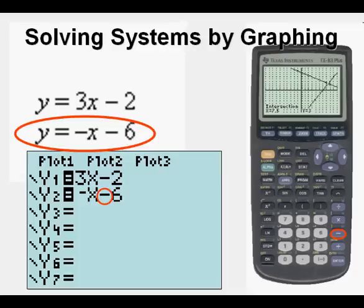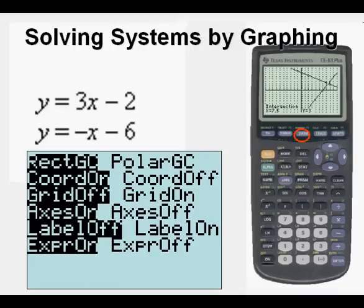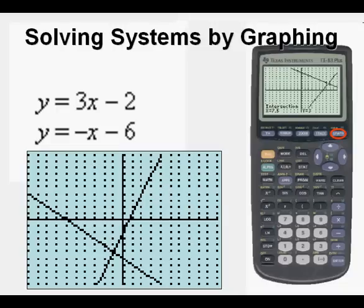Now we go ahead and graph those two functions. And we can find the intersection or the solution, but first we are going to turn grid on by pressing second, then zoom, which gives the format menu. And then we highlight grid on and press graph and we get our dots. Those dots can help give us perspective on seeing where the solution is.